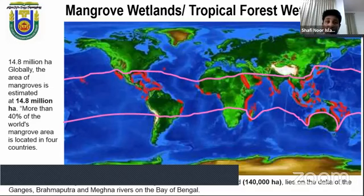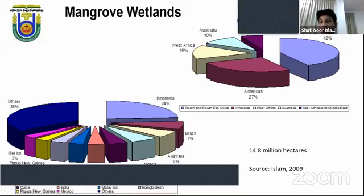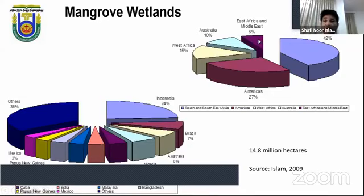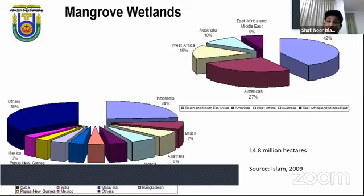We have already lost more than 45 percent of mangrove globally. South and Southeast Asia cover 42 percent of mangrove; East Africa and the Middle East only 6 percent; Australia 10 percent; West Africa 15 percent; and the Americas 27 percent. By country, Indonesia has the highest coverage, followed by Brazil at 7 percent, Australia 6 percent, Nigeria and India at 3 percent each, Papua New Guinea at 3 percent, with all other countries covering 34 percent — a total of 14.8 million hectares playing a vital role in food security for coastal communities.